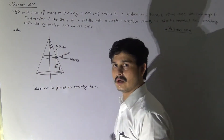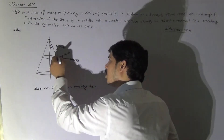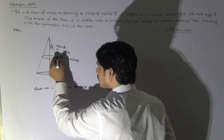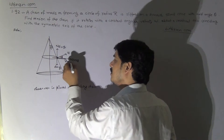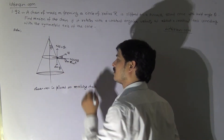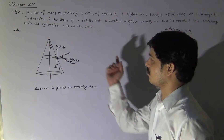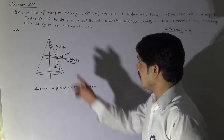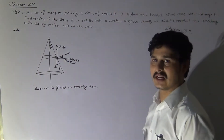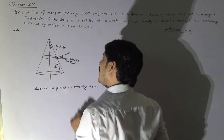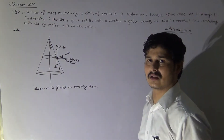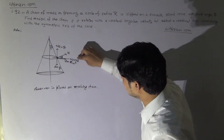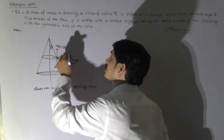In the revolving frame, the small segment dm experiences an outward centrifugal force of magnitude dm·R·ω². So, for the small segment, the forces are: dm·R·ω² outward, N cosθ outward, N sinθ upward, dm·g downward, and since there is no friction, the force maintaining equilibrium is the tension of the chain.